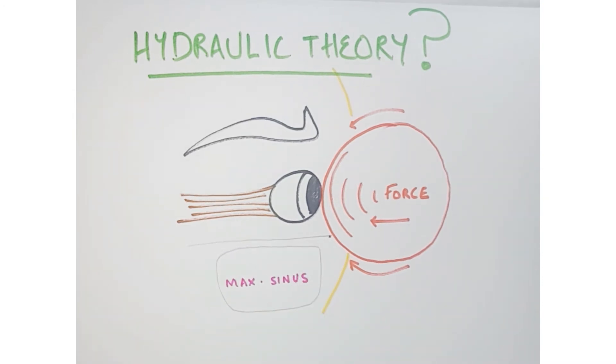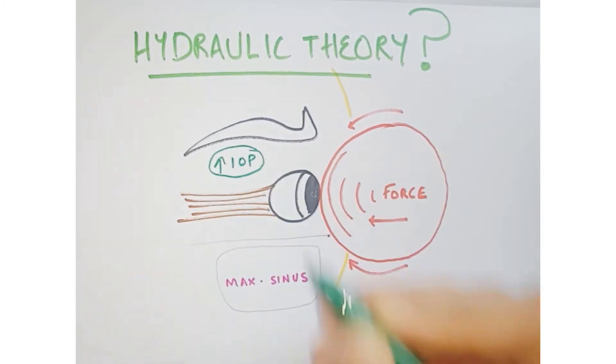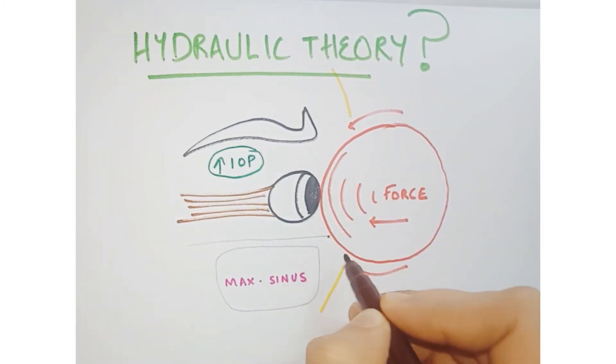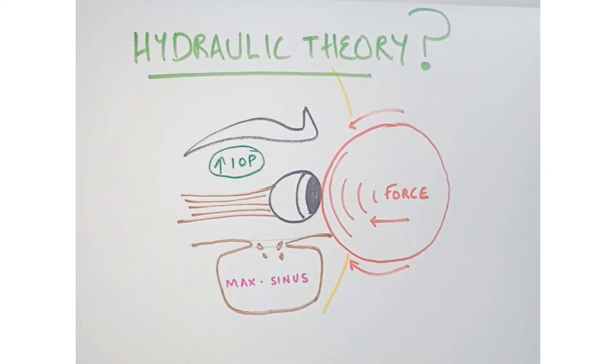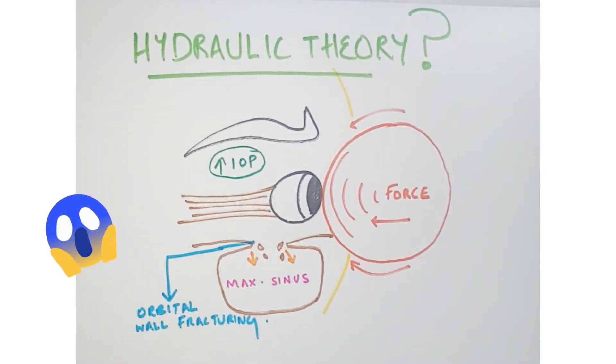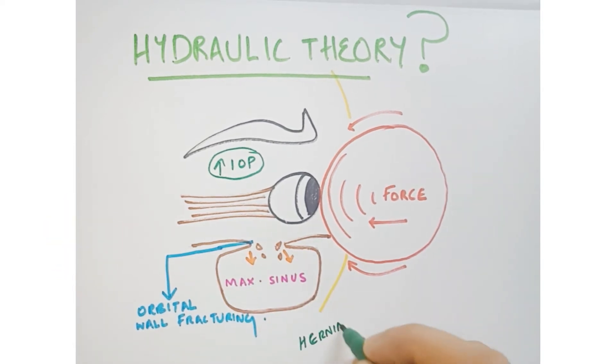the hydraulic pressure within the orbit increases, or the intraorbital pressure increases. This causes the floor of the orbit to fracture. The broken parts along with soft tissues get into the maxillary sinus, called herniation.